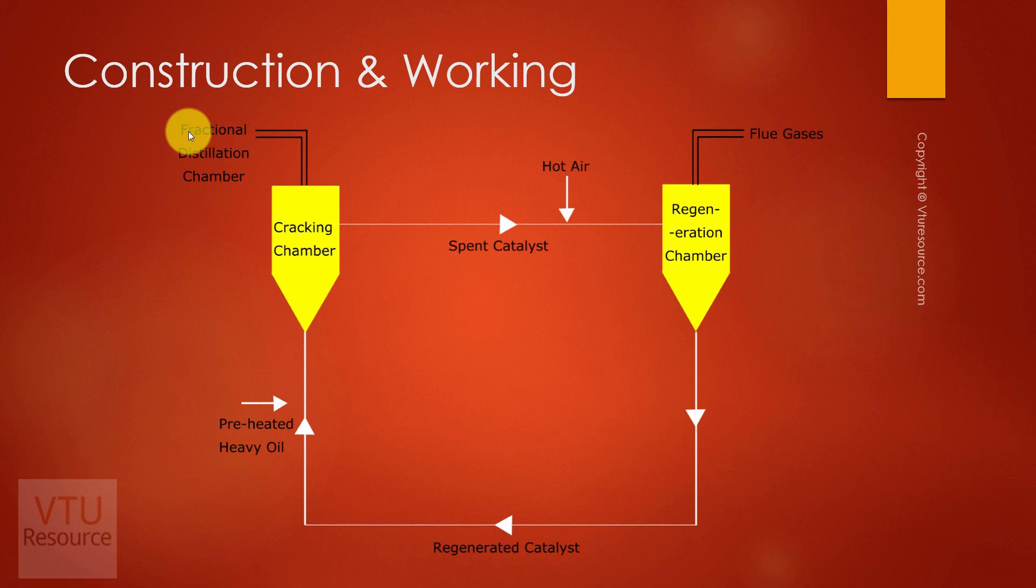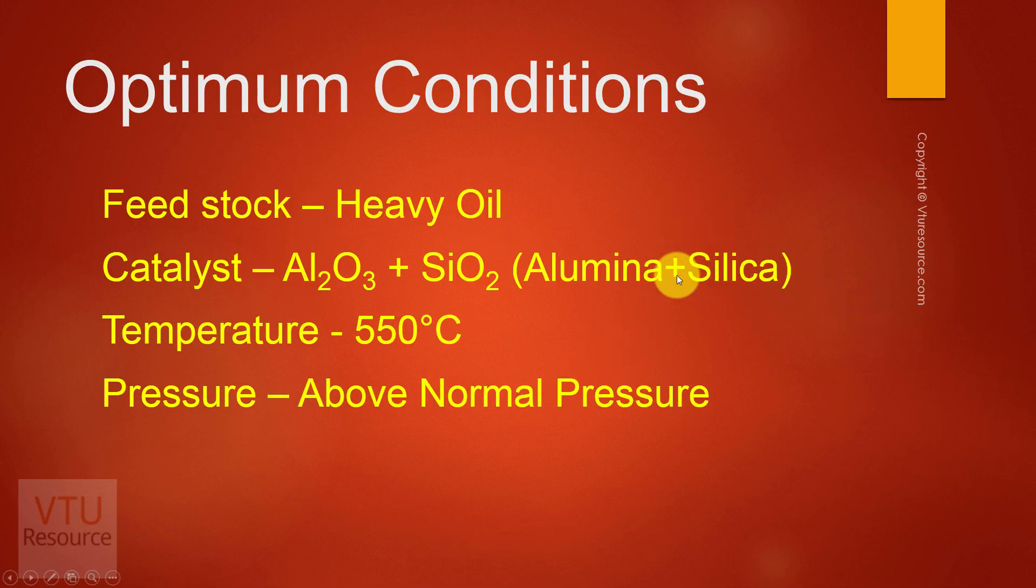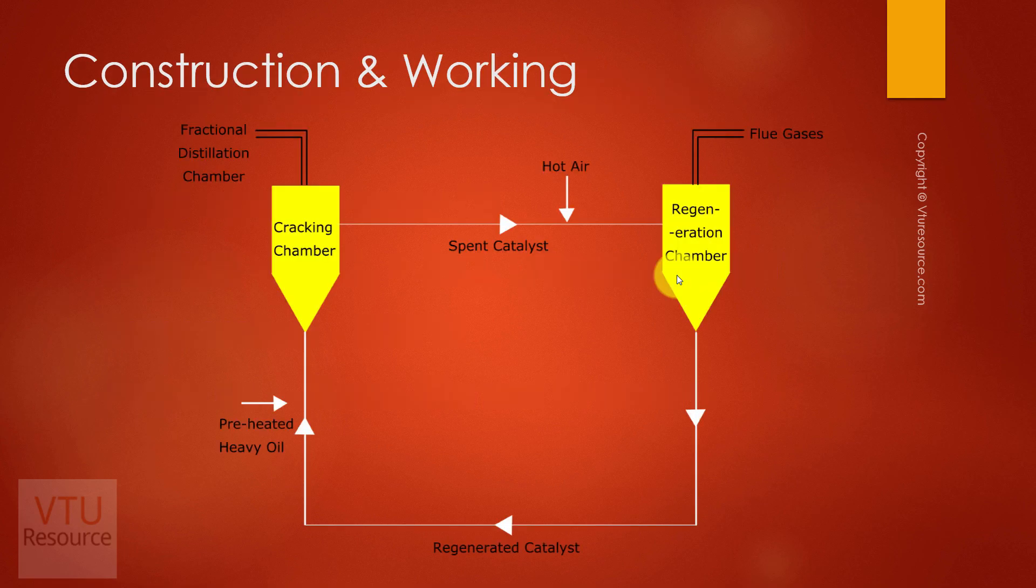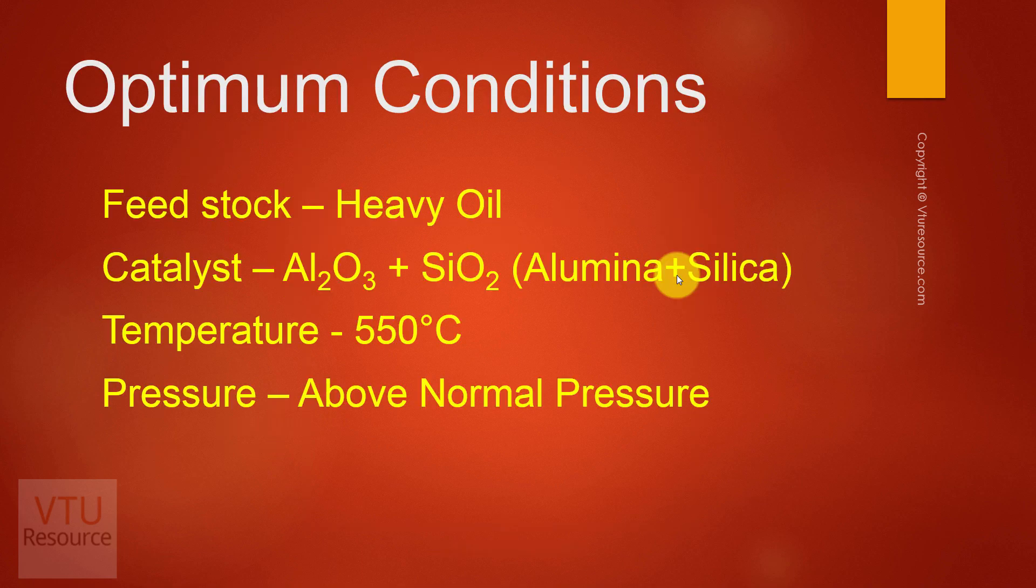In the examination, diagram carries 1 mark, optimum condition carries 2 marks, explanation carries 2 marks. This will be asked for 5 marks. Out of 5 marks, I repeat, diagram 1 mark, legible label diagram 1 mark, optimum condition should be written below the diagram and carries 2 marks, explanation carries 2 marks. Thank you.